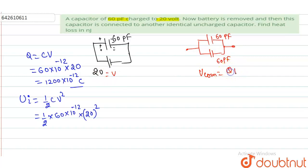so this is Q total divided by total capacitance, that is 2C. Q total is what? We have found Q1 has some charge of 1200×10^-12. Another has zero charge, divided by 2C. C is 60 picofarad, 60×10^-12. Minus 12 minus 12 getting cancelled, so V common comes out to be 10 volts.